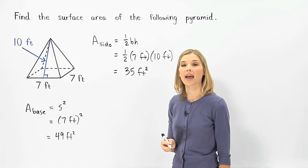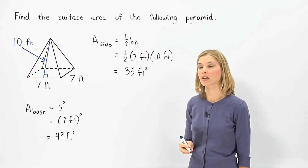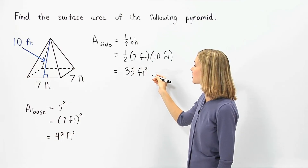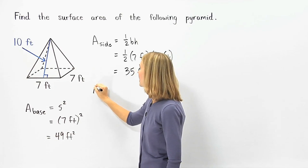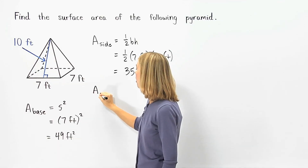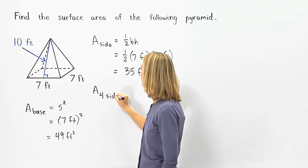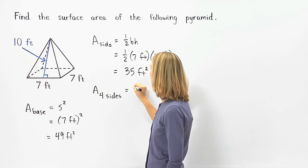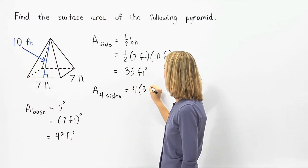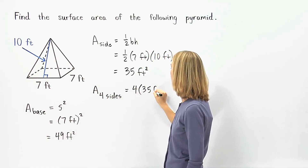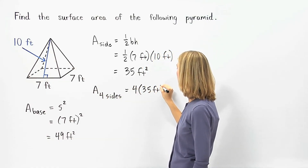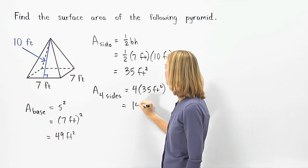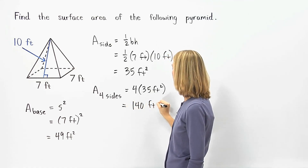So the area of each side of the pyramid is 35 square feet. Therefore, the area of all 4 sides of the pyramid is 4 times 35 square feet, which equals 140 square feet.